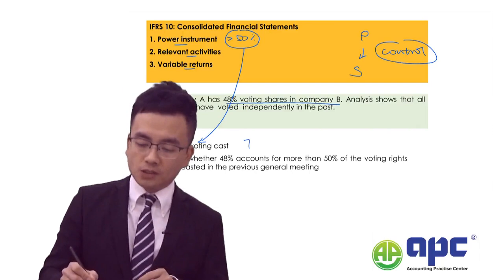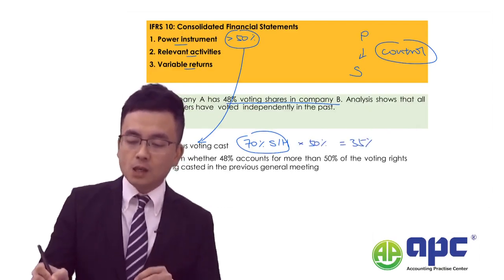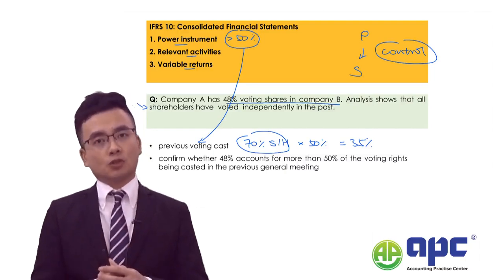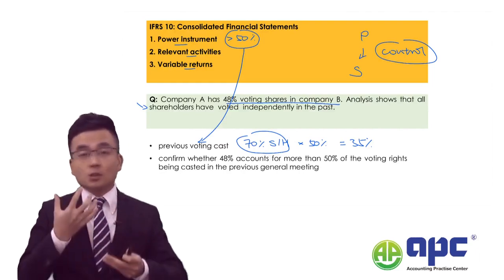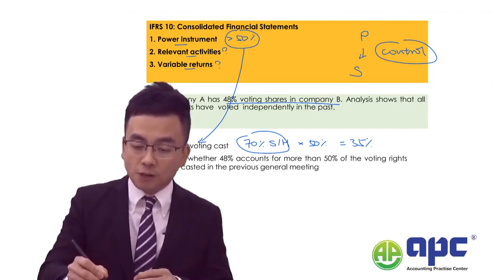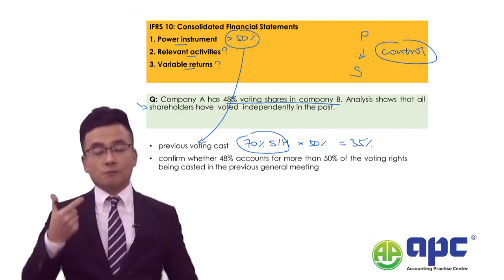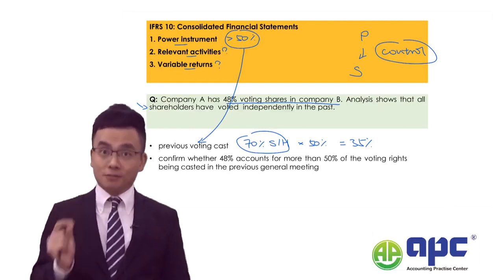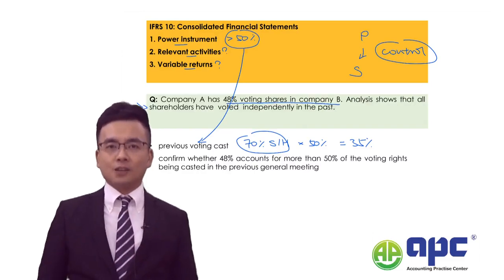For example, let's say in the past only 70% of shareholders voted. Then 70% times 50% equals 35%. If we have 48%, that is more than 35%, and we can confirm that we have power instruments to control that entity. Make sure you understand why the examiner is structuring this question — the focus is on the power instrument and how to define that 50% according to past voting at previous annual general meetings.